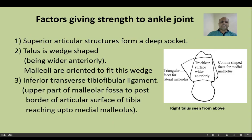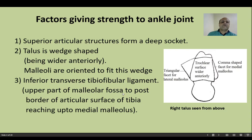The ankle joint is quite strong for several reasons. First, the superior articular surfaces form a deep socket. Second, the talus is wedge-shaped — it is wider anteriorly compared to the posterior aspect — and the malleoli are oriented to fit this wedge. Third, the inferior transverse tibiofibular ligament bridges the gap between tibia and fibula posterior to the talus, passing from the upper part of the malleolar fossa of fibula to the posterior border of the articular surface of tibia, reaching up to the medial malleolus.